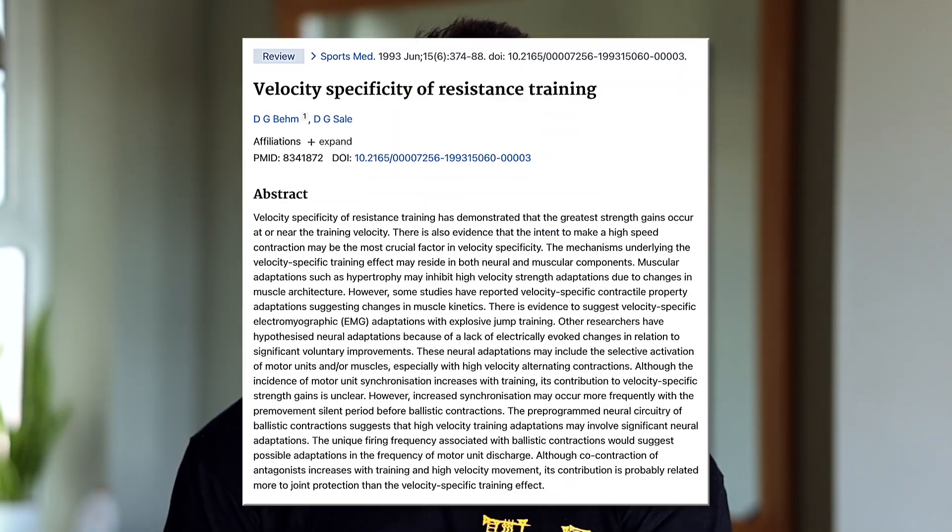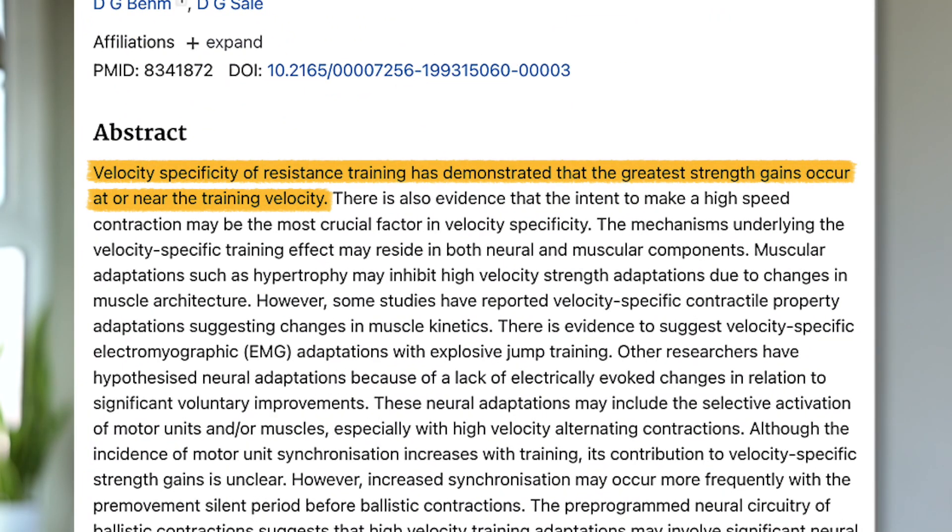Gains in strength may also be velocity specific. If your goal is to deadlift as much as possible for one rep, the velocity of that outcome will be pretty slow. So for some of your training, you'll want to lift pretty heavy and therefore also pretty slow to train at the same velocity as your outcome. The same could go for something like jumping, where jumping velocity is actually pretty fast, so when lifting for that outcome you may want to be lifting at a pretty fast velocity.